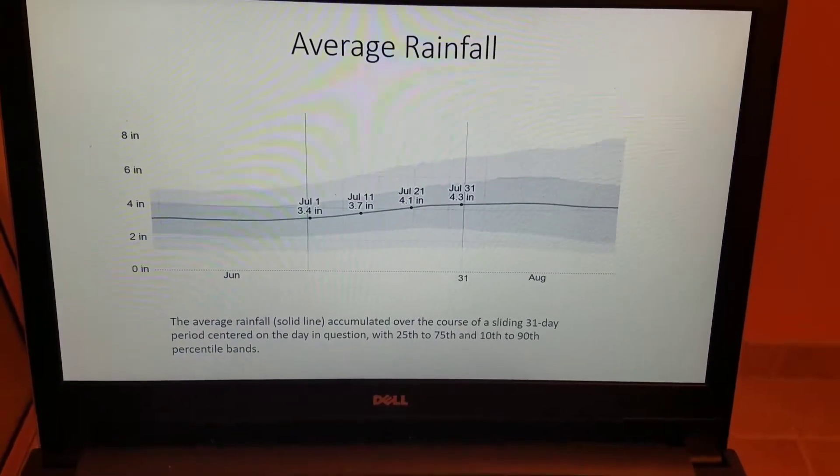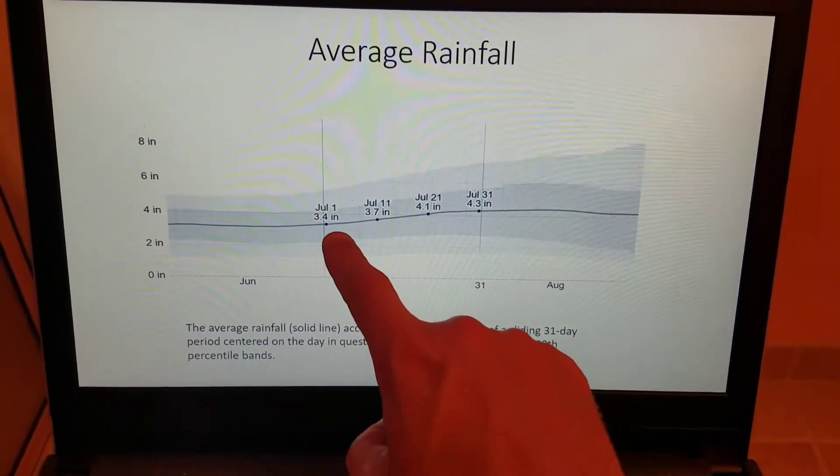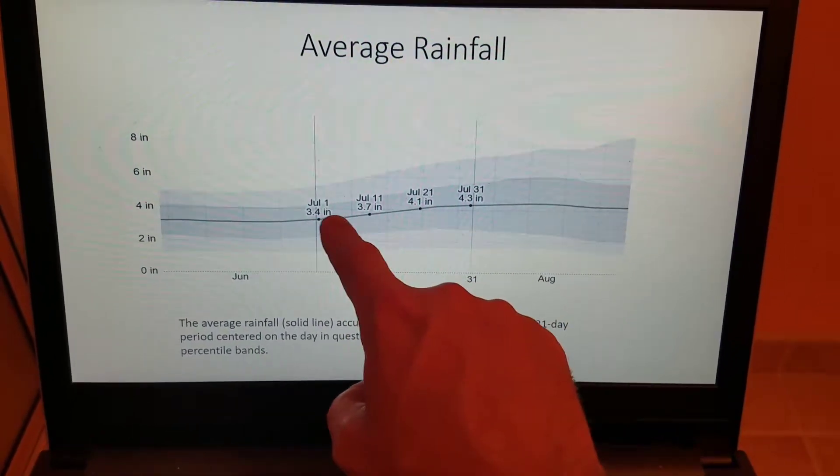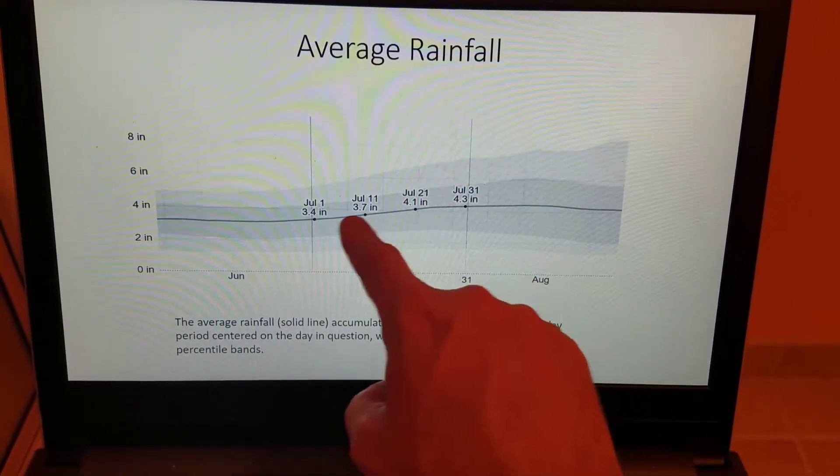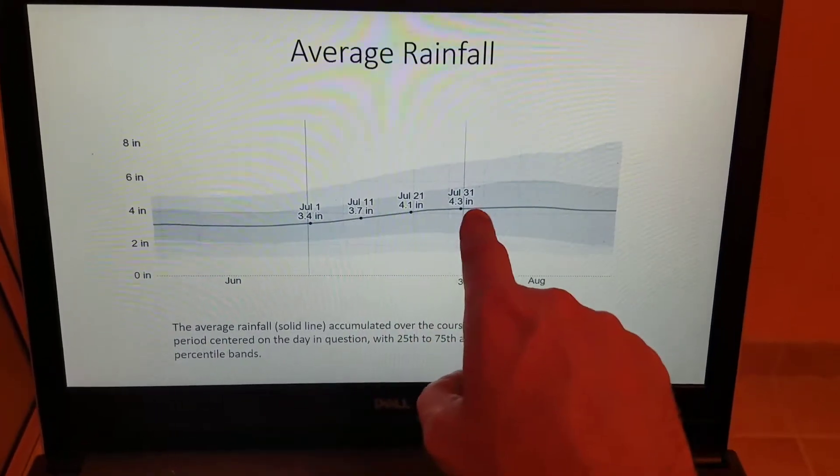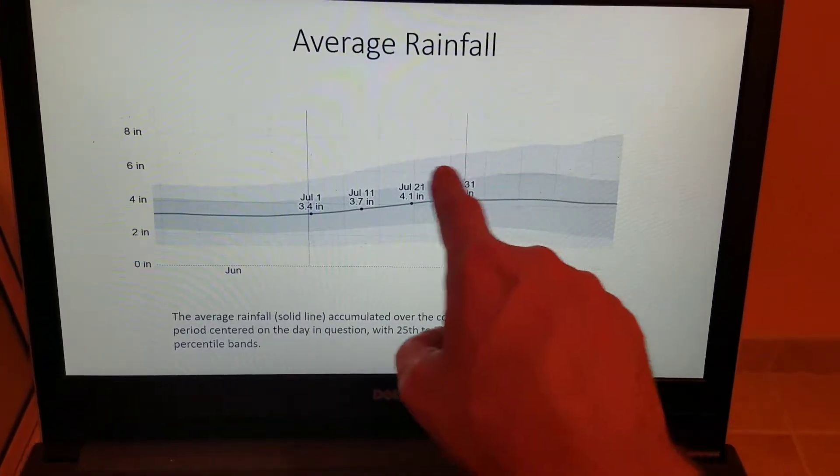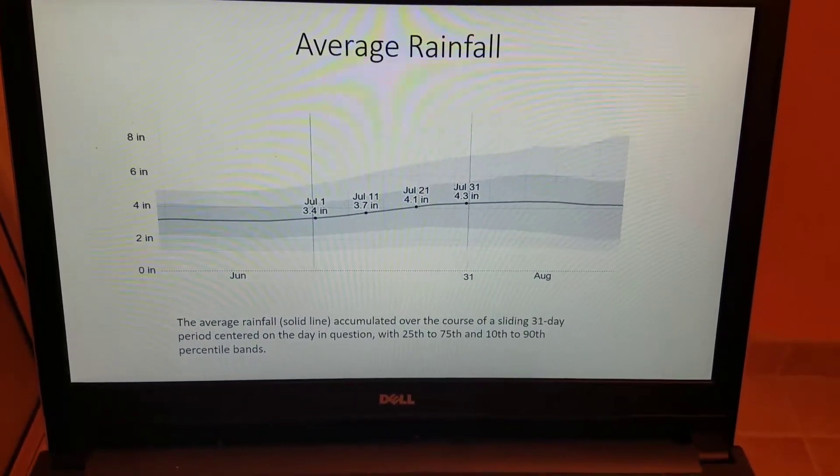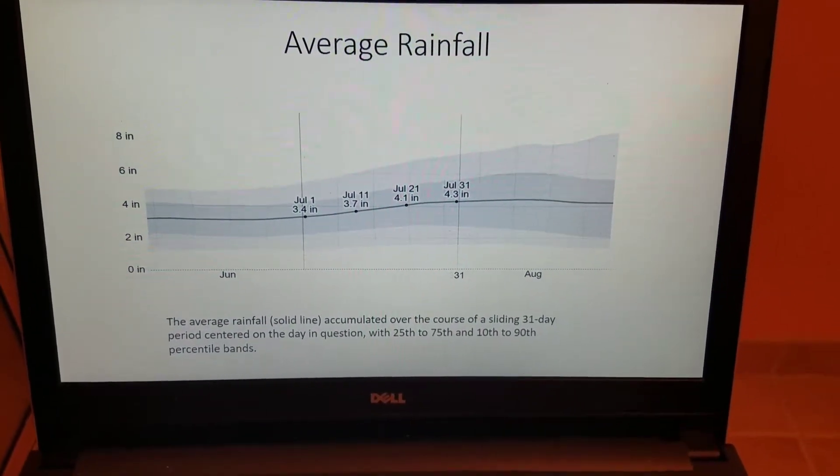Now average rainfall throughout the month generally ranges from, if we were to take any of these days, we generally look at a range of 3.4 to 4.3 inches for the month of July. That's our average precipitation. A lot of that precipitation again comes in the form of scattered thunderstorms.